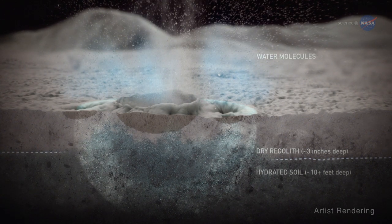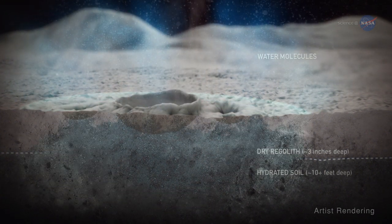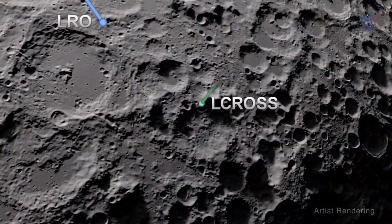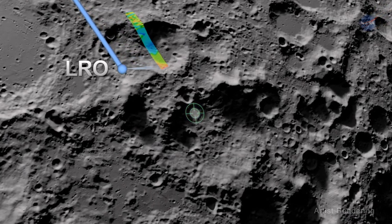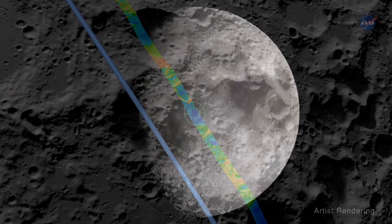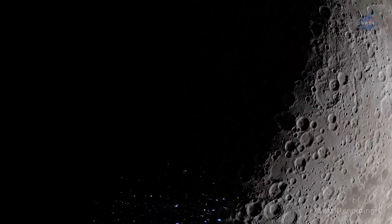And where exactly is the water? We've confirmed that water exists in the Cabeas crater near the Moon's South Pole, where the LCROSS impact occurred. But how plentiful is it? And can we expect to find it in other super-cold regions?